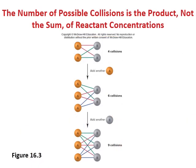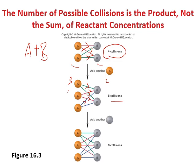With 2A and 2B, there are 4 possible A–B collisions. Add one more A (3A, 2B) and you get 6 collisions. Add one more B (3A, 3B) and you get 9 collisions. The more molecules you have, the more collisions occur and the faster the reaction rate.